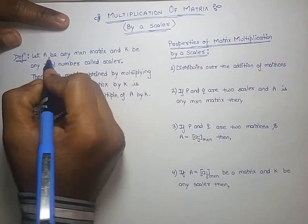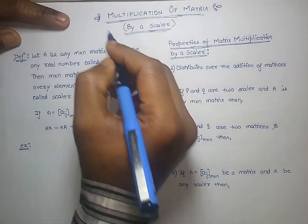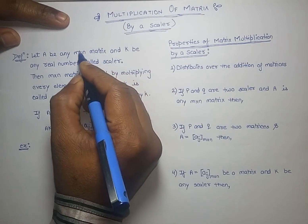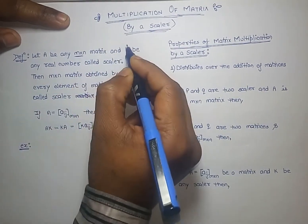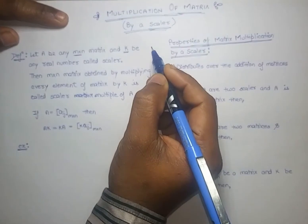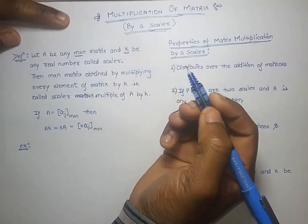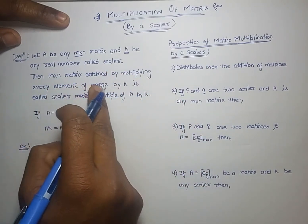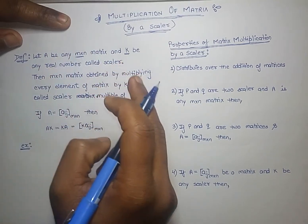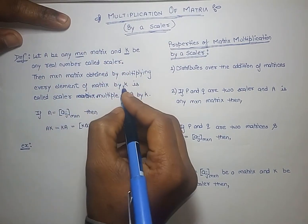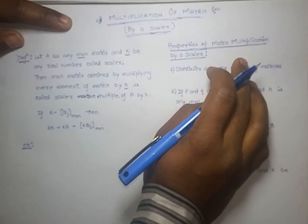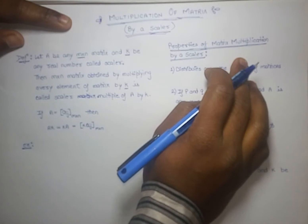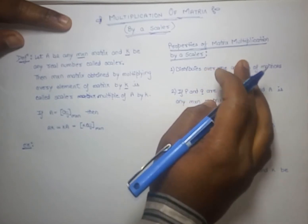For scalar multiplication, let A be any m by n matrix — that is the size of the matrix — and let k be any real number, which is called a scalar number. Then the m by n matrix obtained by multiplying every element of the matrix with the scalar number k is called scalar multiplication.